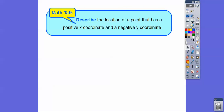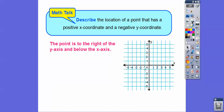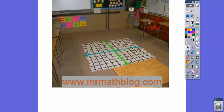Describe the location of a point that has a positive x-coordinate and a negative y-coordinate. A positive x-coordinate means we go to the right, and a negative y-coordinate means we go down. In the next lesson we'll talk about quadrants — quadrant 1, 2, 3, and 4. This point would lie in quadrant 4. That's the next lesson. All right, you guys, take care.